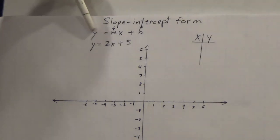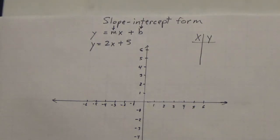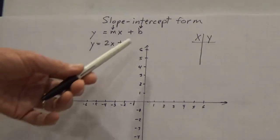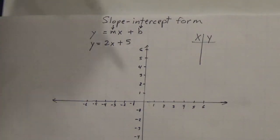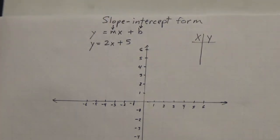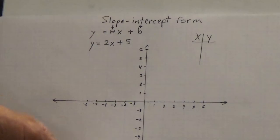Slope-intercept form means we're solving for y, getting y by itself on one side of the equal sign. It's equal to something times x plus or minus something. We call this slope-intercept form because m, which is the coefficient of x — the number that's multiplied times x — is the slope of the line. And b is the y-intercept, where it cuts the y-axis.